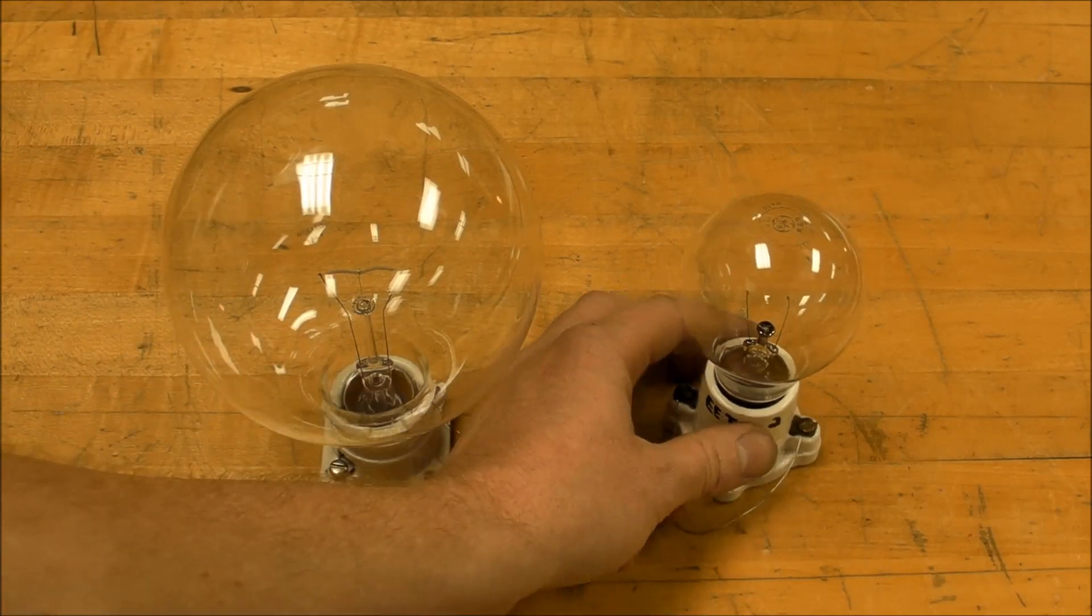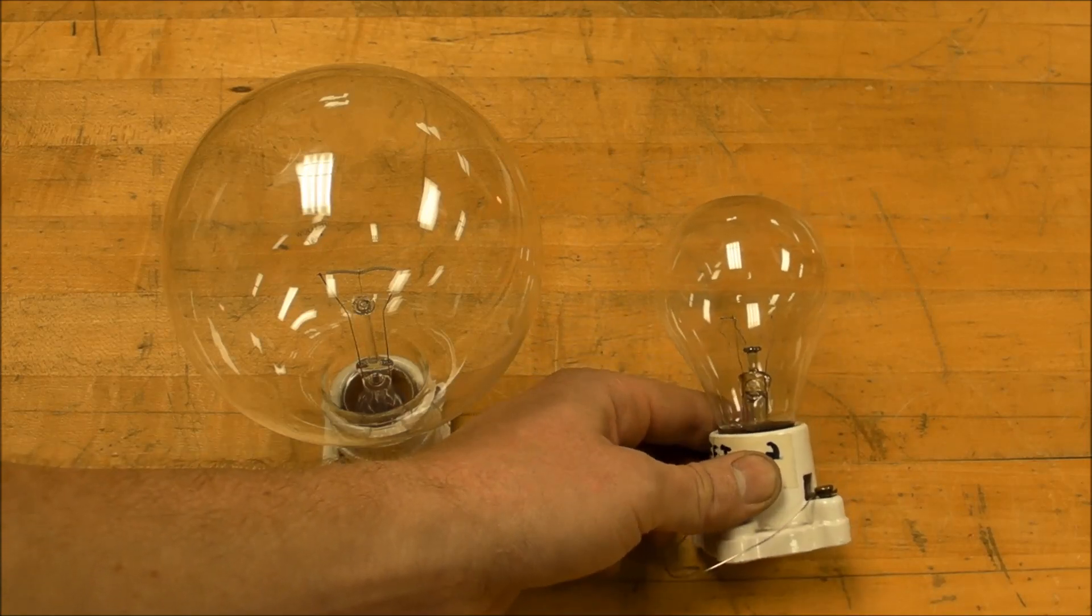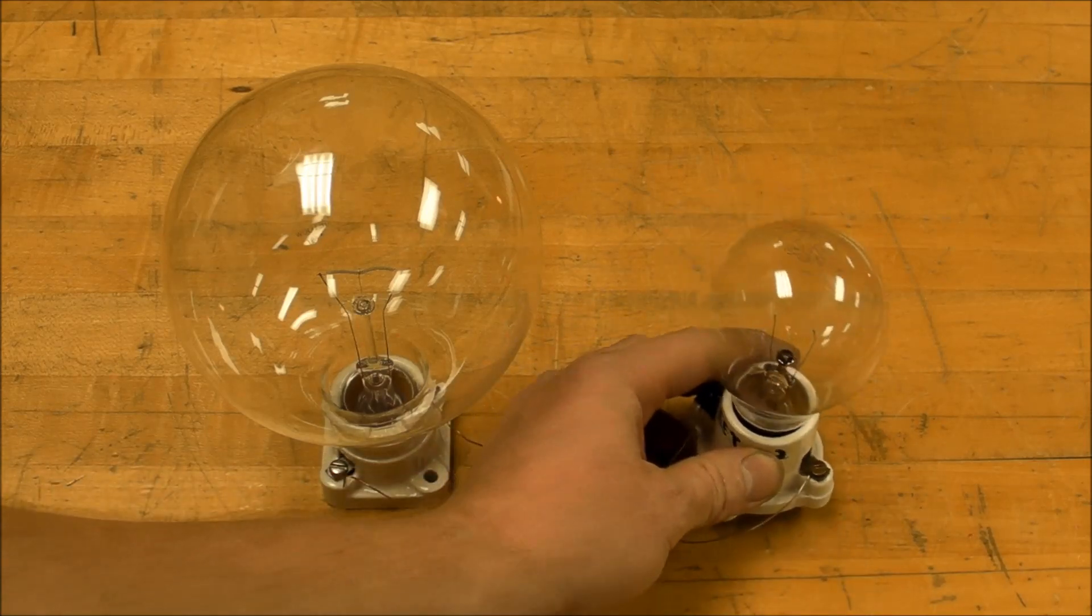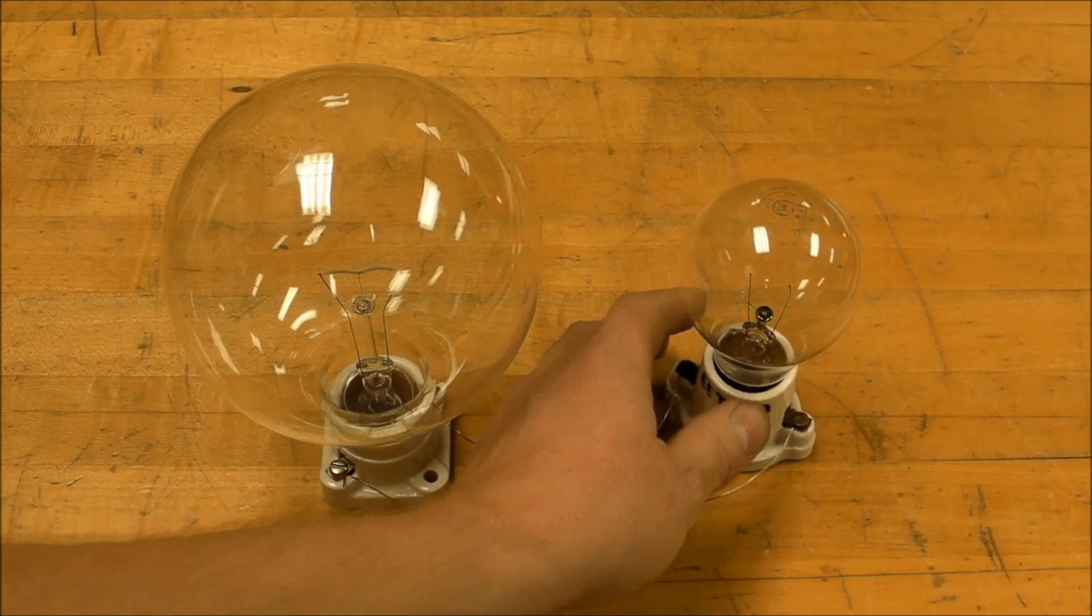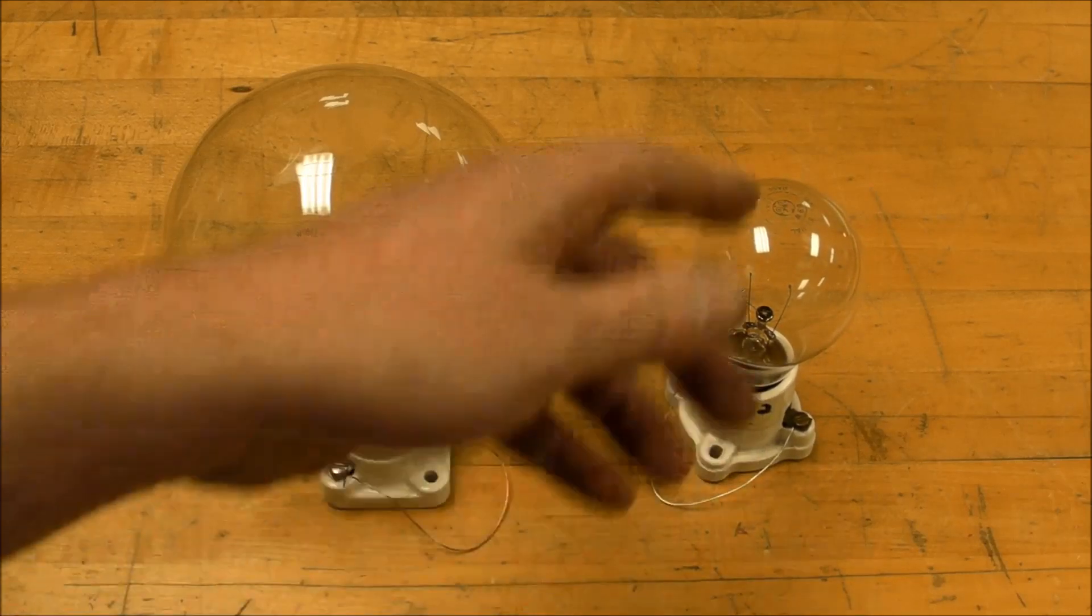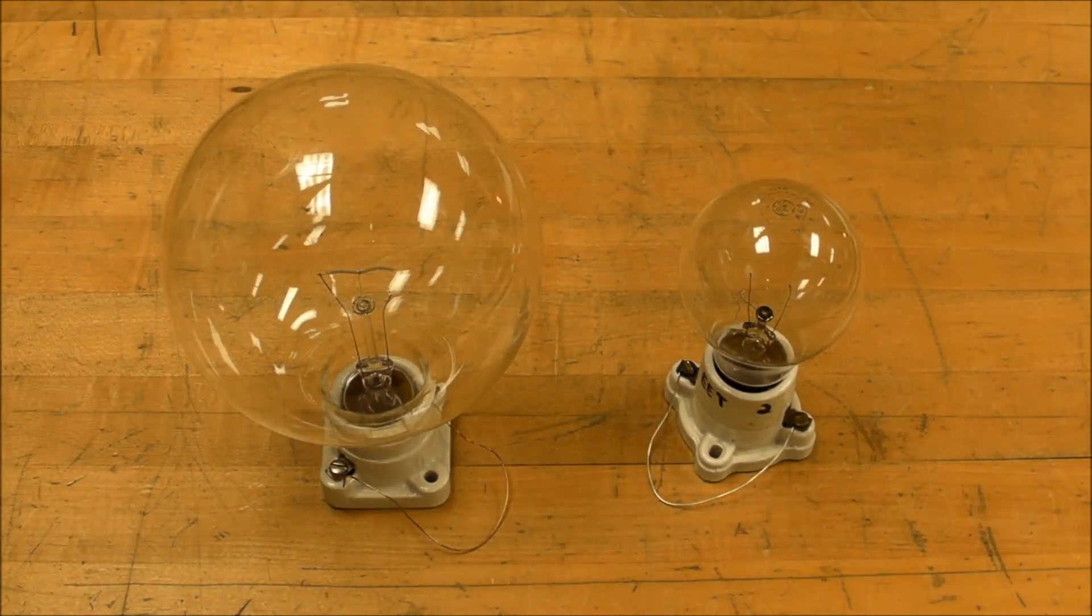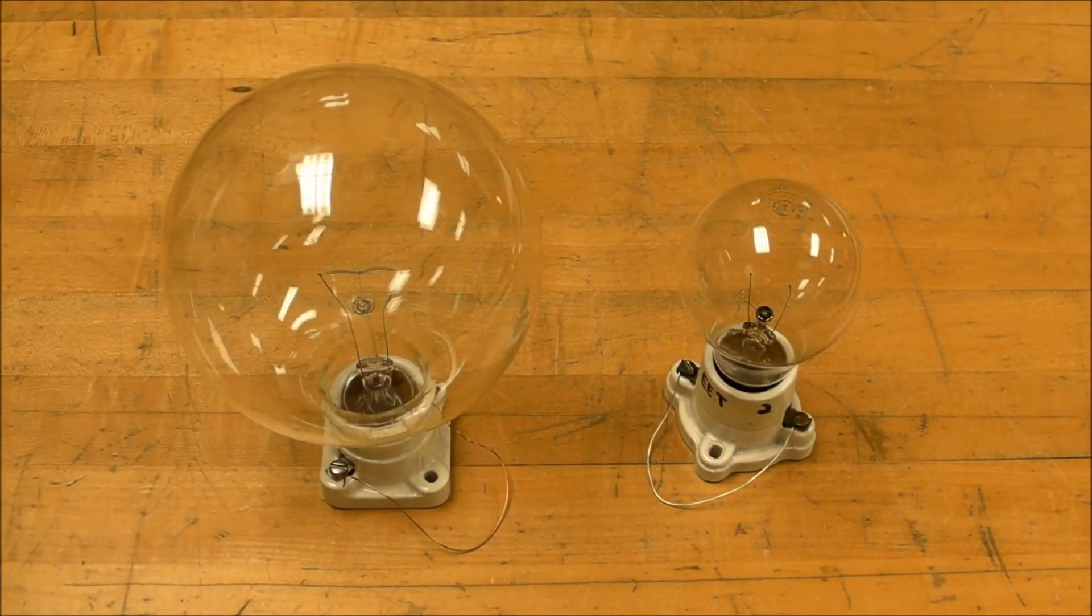And then we have a smaller 69 watt bulb here. I'll do the same thing but this time I'll really crank it up for this one so that the arc discharge actually breaks through the glass and goes all the way up.